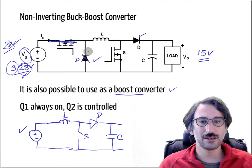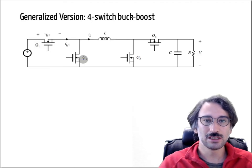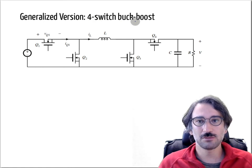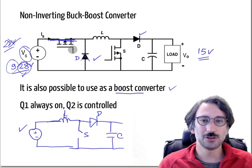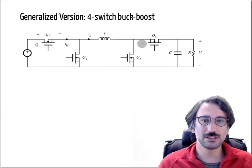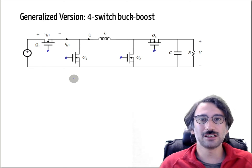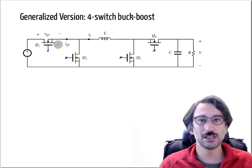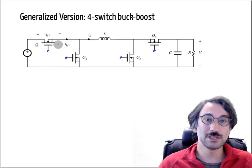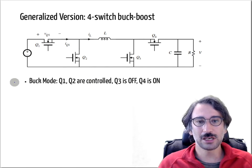You can go even further with this topology by replacing the two diodes with MOSFETs for better efficiency, depending on the forward voltage and current-carrying capacity of those diodes. This gives you what is called the four-switch buck-boost converter. Instead of separate diodes, you now have a MOSFET in each position. The disadvantage is increased control complexity — you now have to generate four gate signals for this topology.